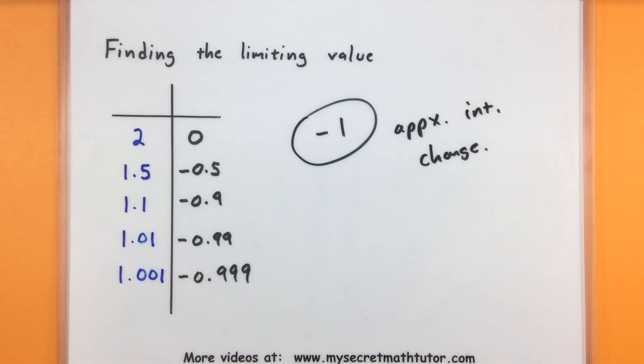So again, the process for this is really just choosing two points, finding the slope between those two points, and then moving them closer and closer together. And fortunately, with the help of the calculator, you can move those points closer to one another fairly simply, making it nice and quick. If you'd like to see some more videos, please visit MySecretMathTutor.com. Thank you.